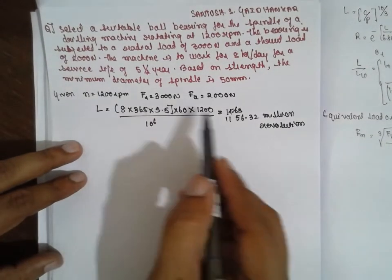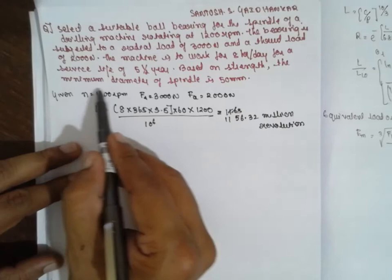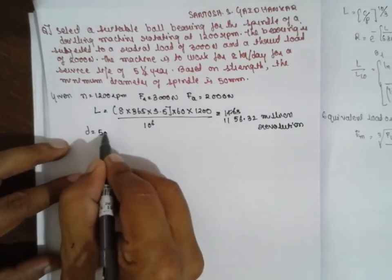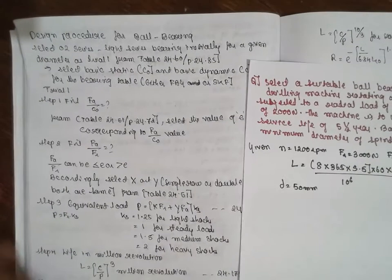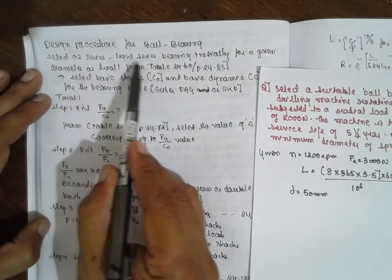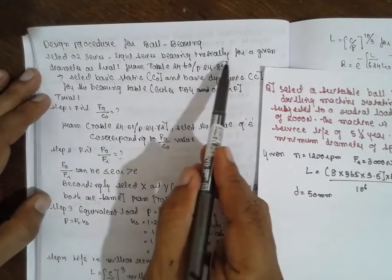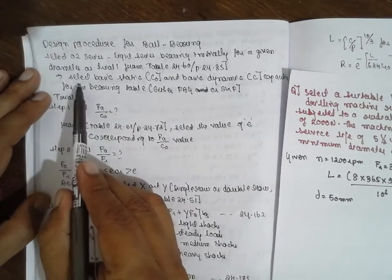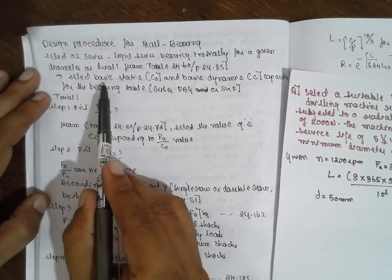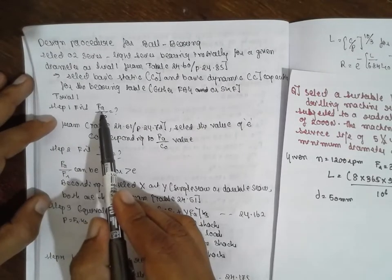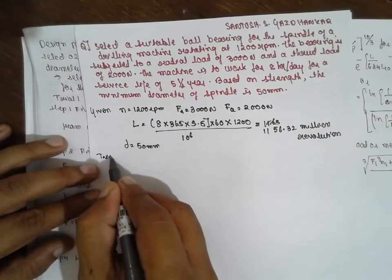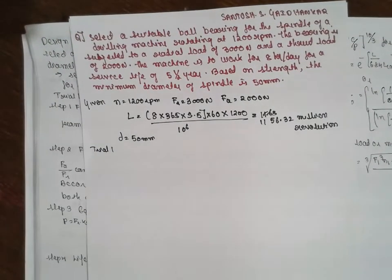Next, based on the strength, the minimum diameter of the spindle is given, which is very important for solving the problem. The procedure I will follow: first, I will select series 2 for light series bearing initially for the given diameter as trial one. I will select the basic static and dynamic load values. I am using the Lingai Data Handbook Volume 2.